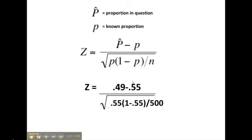Here we have the formula, and here we have it filled in. This is the one we're looking for right here, the 49%. The 55 shows up three times, and the 500 is our sample size. That's going to give us a Z value. So we'll go ahead and solve that, and we get a Z value of negative 2.6968.